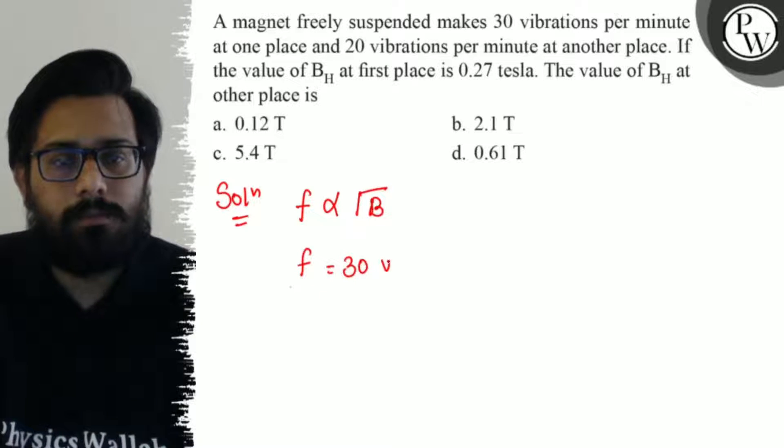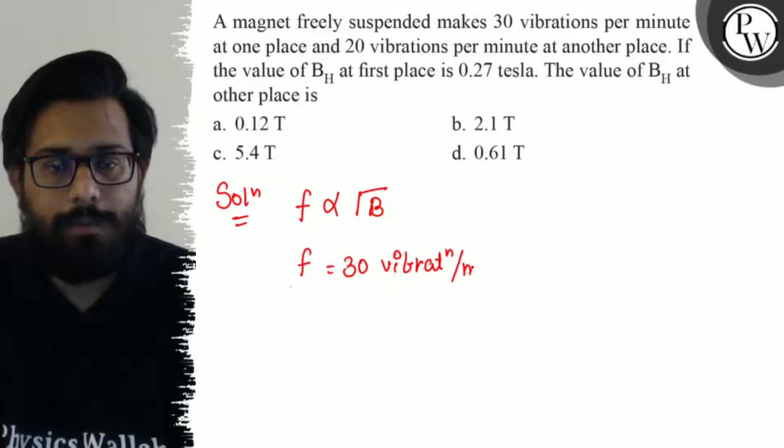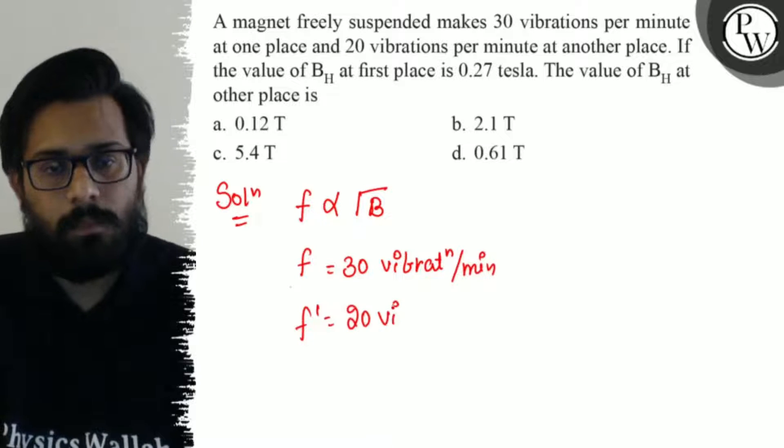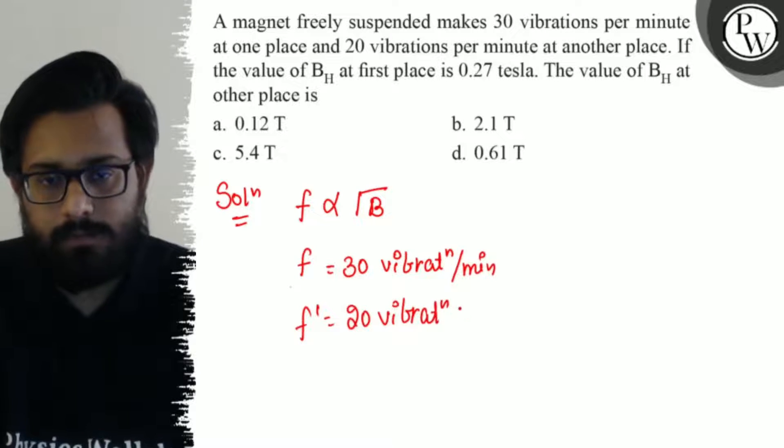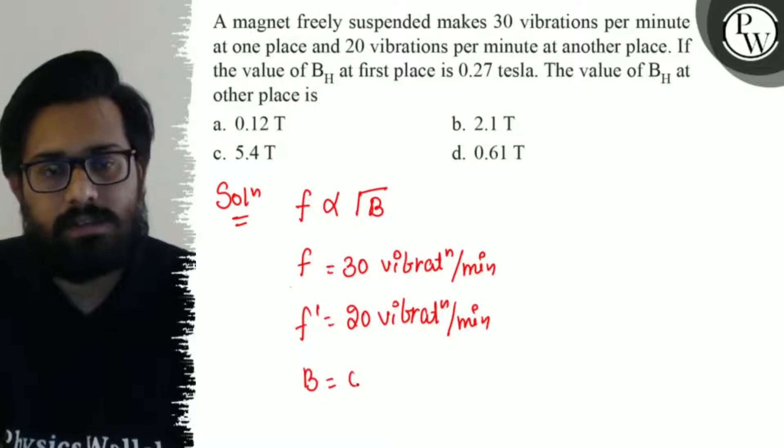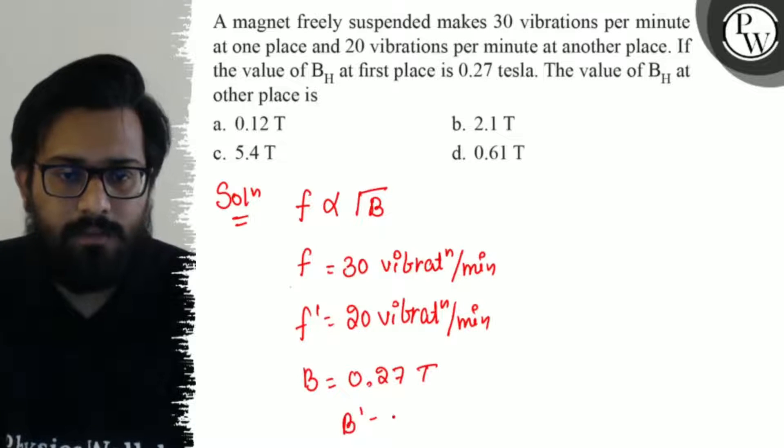Again, 20 vibrations per minute. Second case, in the second case, my frequency here we have 20 vibrations per minute. In the first case, my magnetic field here we have 0.27 tesla. In the second case, my magnetic field which is unknown...